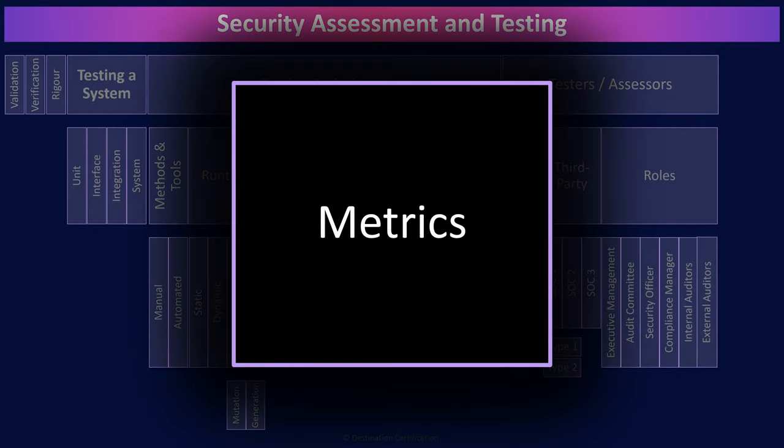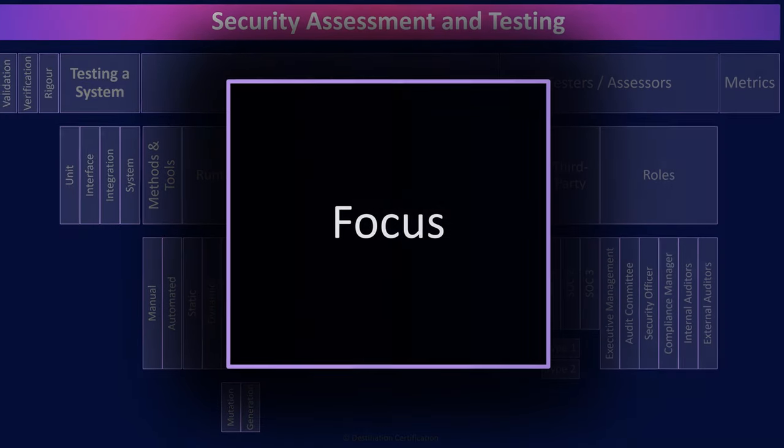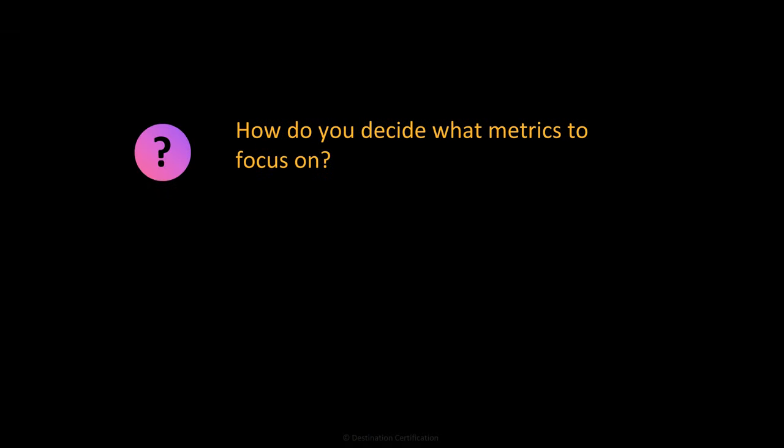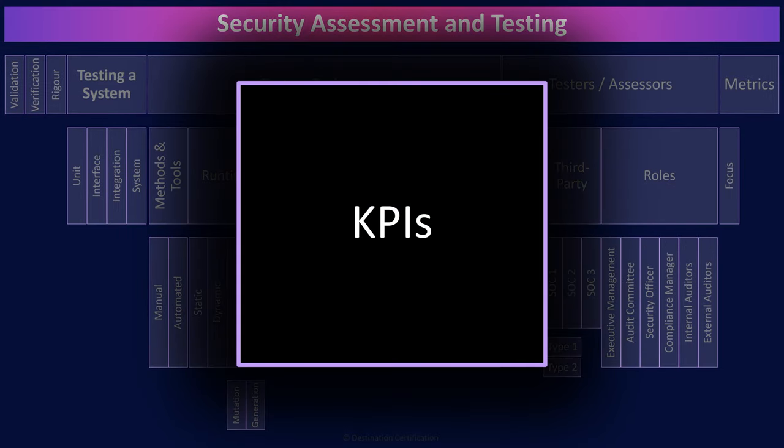As part of security assessment and testing, it is important to define metrics to measure what matters. How do you decide what metrics to focus on? It should always be tied back to the business goals and objectives. If you understand what the business is trying to achieve, you can create metrics that demonstrate if progress is being made in that direction. Two specific types of metrics you can use are KPIs and KRIs.